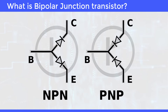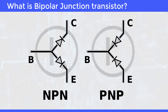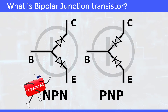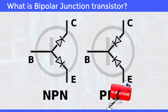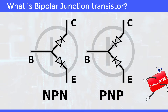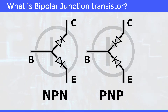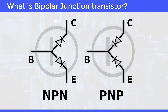NPN and PNP are two prime types of BJTs. A BJT is turned on by giving input to the base because it has the lowest impedance of all transistors. Amplification is also highest for all transistors.